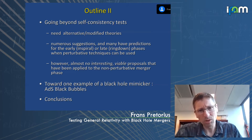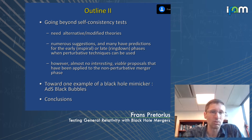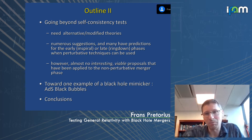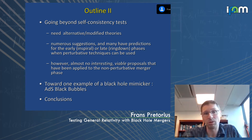Most of this talk will focus on the second aspect — going beyond so-called self-consistency tests. For that we need alternative and modified theories. There are actually many suggestions for how you might modify gravity or consider exotic alternatives to black holes, and many of these theories do have predictions for the perturbative aspects of the merger problem.